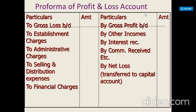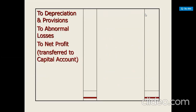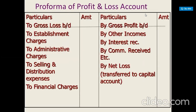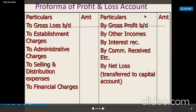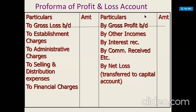The proforma for profit and loss account is: if there is gross loss, it is to be debited. Then all other indirect expenses like establishment charges, administrative charges, selling and distribution expenses, financial charges, depreciation and provisions, and any abnormal losses are written on the debit side. On the credit side, gross profit — as it is income — is transferred to the credit side, and other incomes like interest received and commission received are also entered on the credit side.